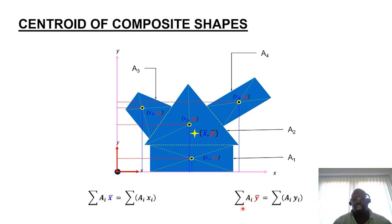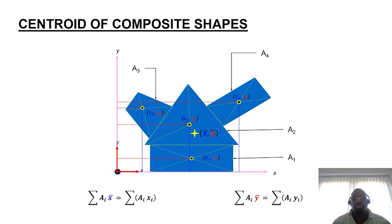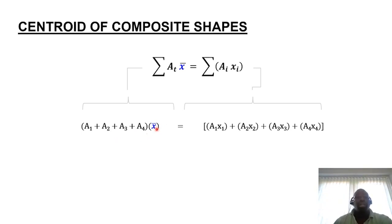In terms of y, it's more or less the same: the total area of the form times the global coordinate in terms of y (y-bar) equals the first moments of area of all the individual shapes with respect to y — that's A1 times y1 plus A2 times y2 plus A3 times y3, and so on. So the sum of all the segments (A1 plus A2 plus A3 plus A4, depending on how you've decomposed the form) times the global x-coordinate equals the individual first moments of the segmented forms.